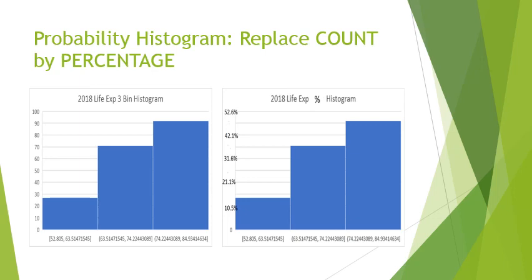To see how this works, we look at the three-bin histogram from the previous lecture. The first bin, going from 52.8 to 63.5, has about 27 countries. The middle bin has 71 countries, and the last bin has about 92 countries. This is the standard count histogram. Now we want to change that to a percentage, so instead of 27 countries, we look at the ratio — 27 out of 190.